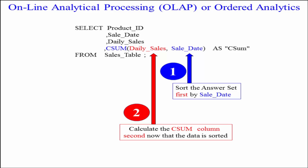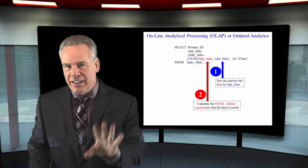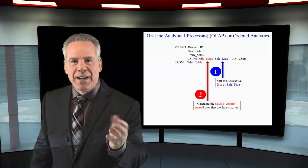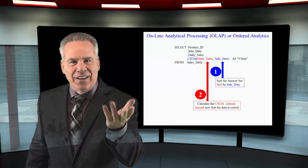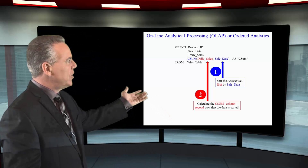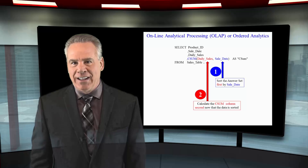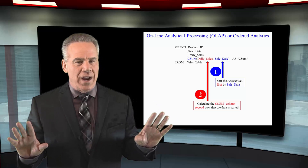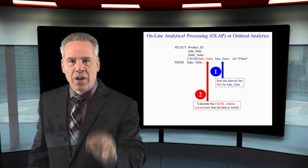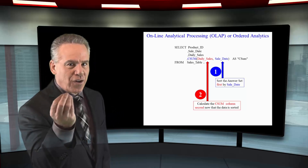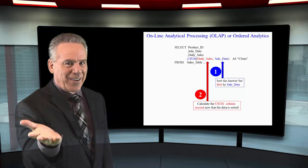That's why they're called ordered analytics, because the first thing every ordered analytic does is sort the data before any calculations are done. Here you can see we are going to do a CSUM on daily sales, but first we're going to sort all the rows by sale date. That's how ordered analytics work. You never put an ORDER BY at the end because you're going to sort within the calculation first and then begin the calculations.